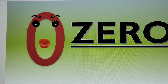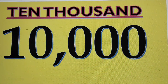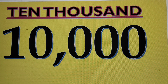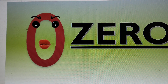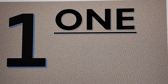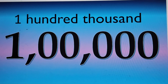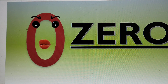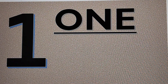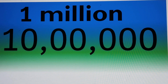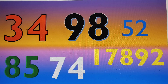Now, see another magic. When we add 3 zeros to the number 1, it becomes 1,000. When we add 4 zeros to the number 1, it becomes 10,000. Another magic is here. When we add 5 zeros to the number 1, the number we get is 100,000. When we add 6 zeros to the number 1, it becomes 1,000,000. Wow, what a magic!